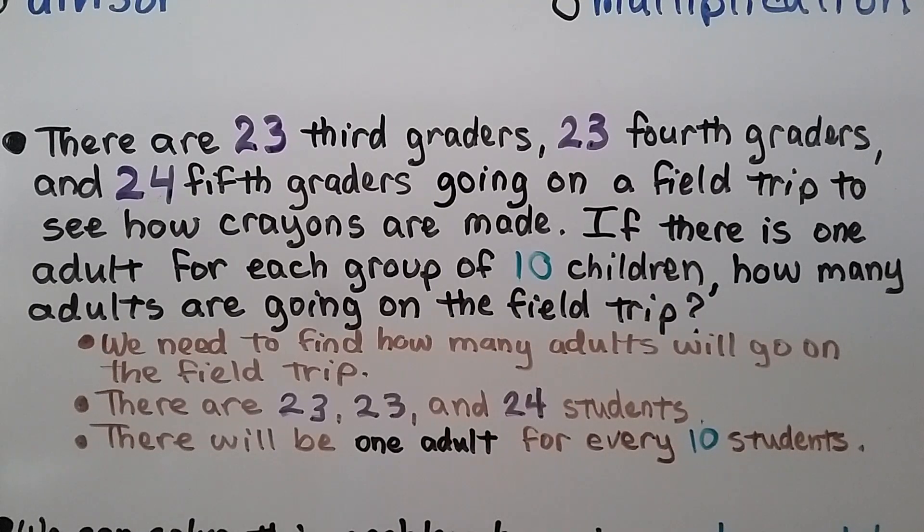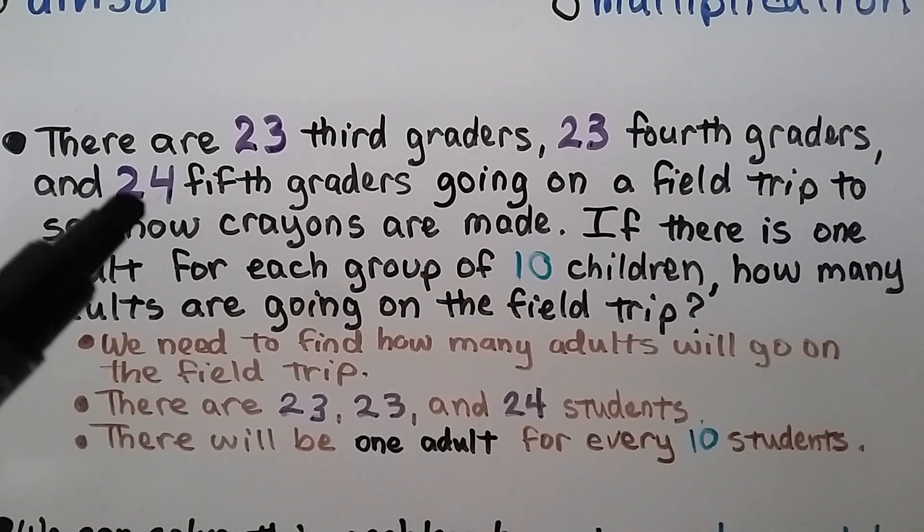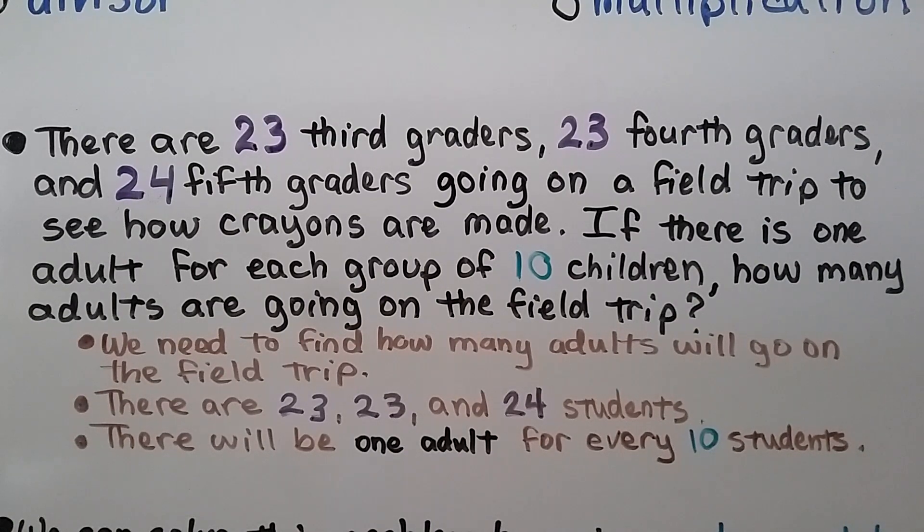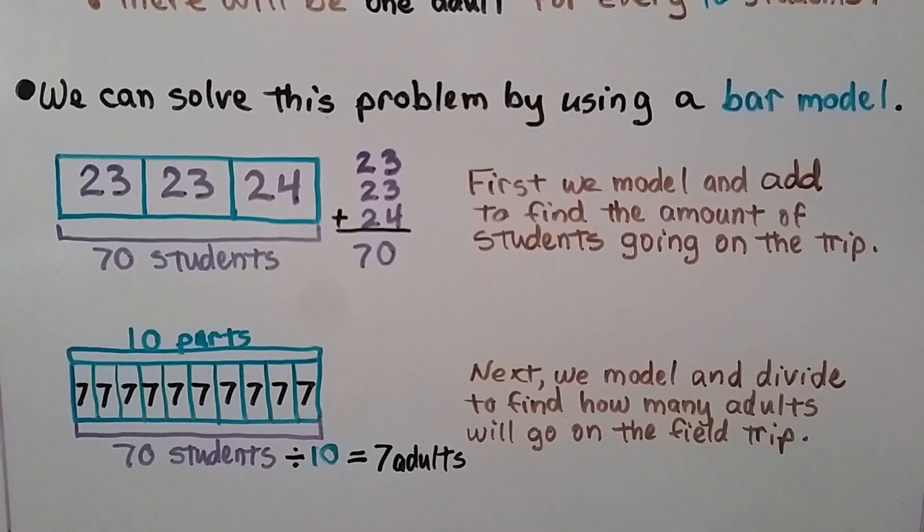There are 23 third graders, 23 fourth graders, and 24 fifth graders going on a field trip to see how crayons are made. If there is 1 adult for each group of 10 children, how many adults are going on the field trip? We need to find how many adults will go, and we know there are 23, 23, and 24 students. There will be 1 adult for every 10 students.